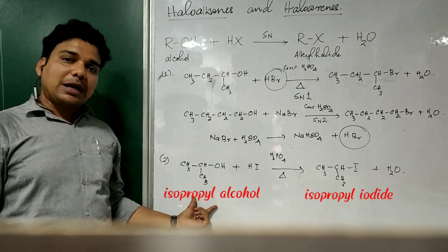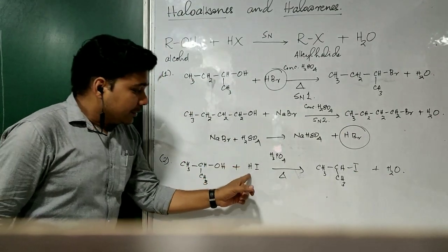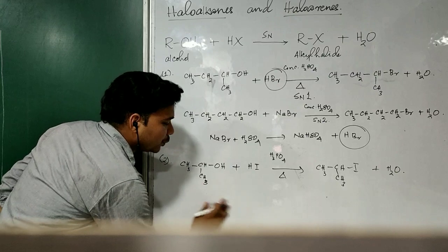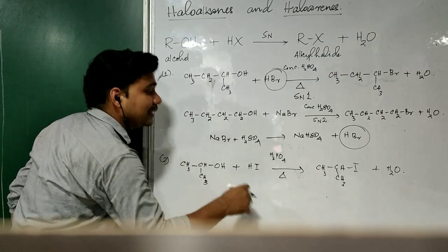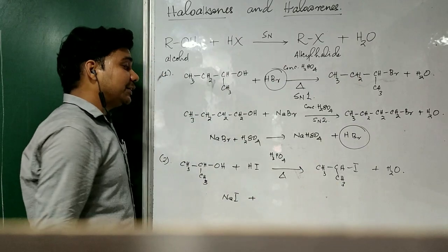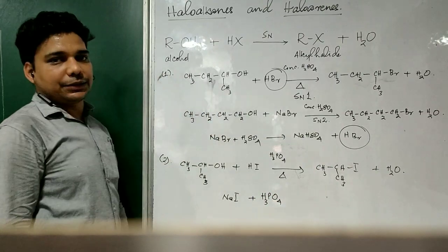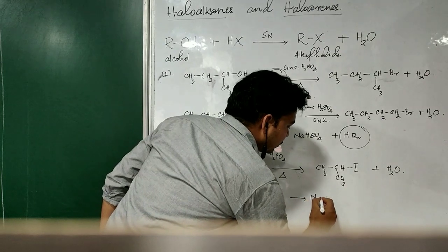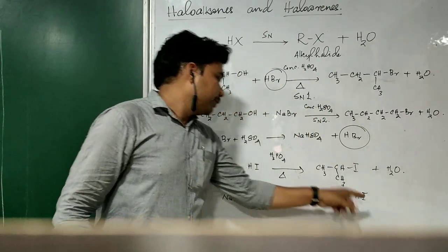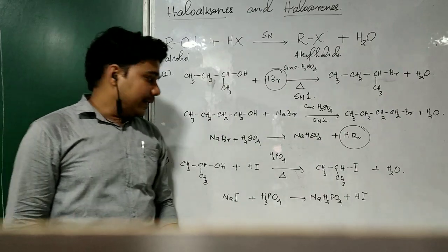Similarly, I can take a primary alcohol as a substrate molecule; when treated with HI, I will get the corresponding alkyl iodide. HI can be generated in the reaction medium like HBr. However, to prepare HI in the reaction medium, I need to use NaI or KI — sodium iodide or potassium iodide — but I cannot use concentrated H2SO4. Using H3PO4 gives NaH2PO4 and HI, and this HI reacts with the alcohol substrate to form the final product.